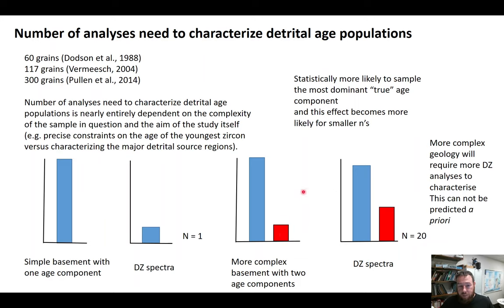Statistics is our friend here, because no matter what, the most dominant detrital component — even with a small n sampling — should be the most dominant source. That's why even small-n detrital zircon data sets can be powerful.